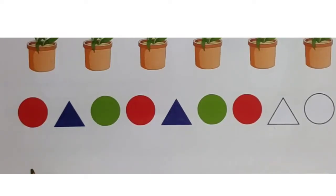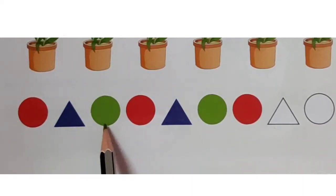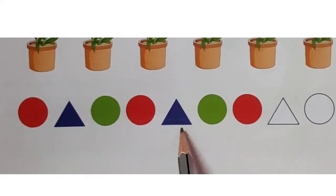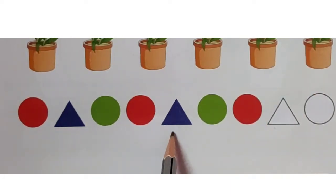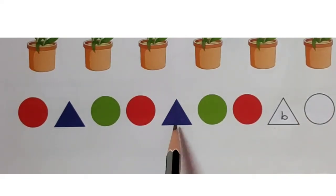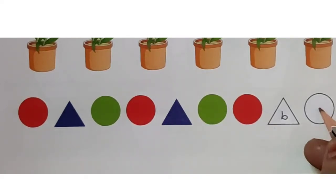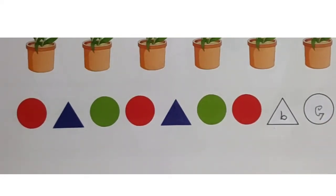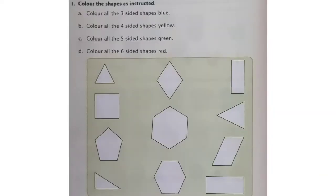Let us move on to the next one. Circle, triangle, again two circles. Triangle, two circles. So, these triangles are blue colour. So, this triangle should be blue colour. Next, after blue colour triangle, we get green colour circle. So, green colour circle. Colour these two — triangle and circle. Triangle blue colour and circle with green colour.